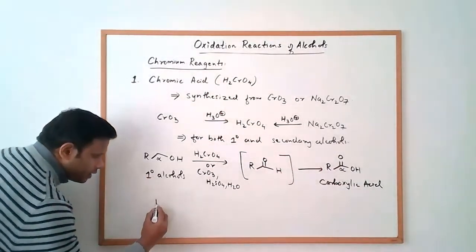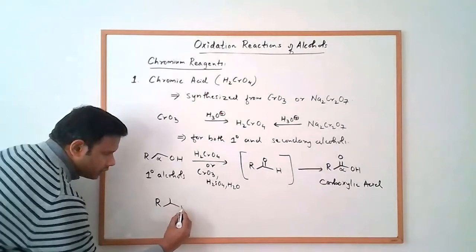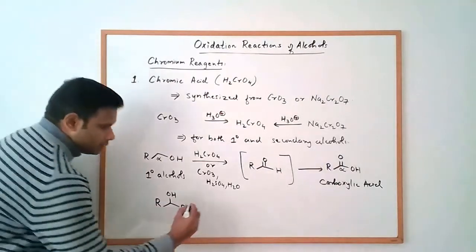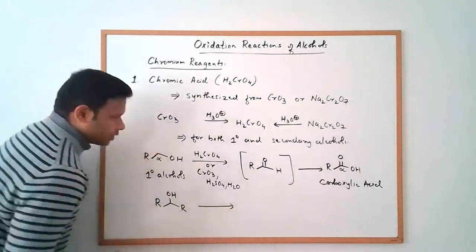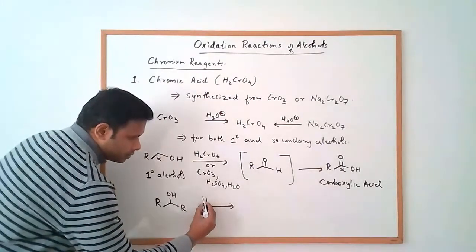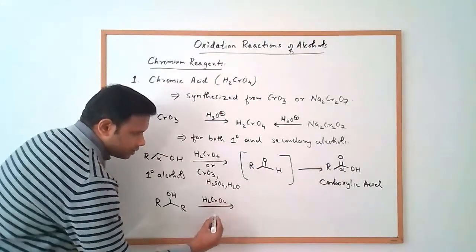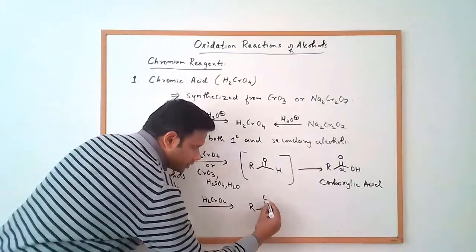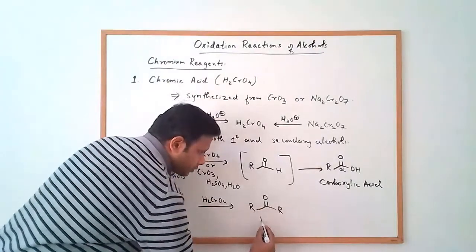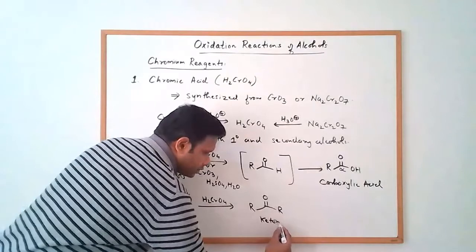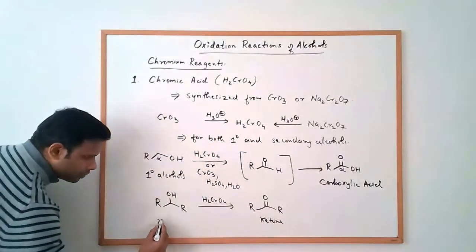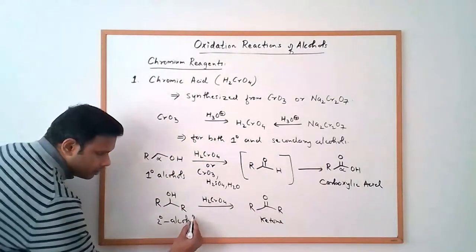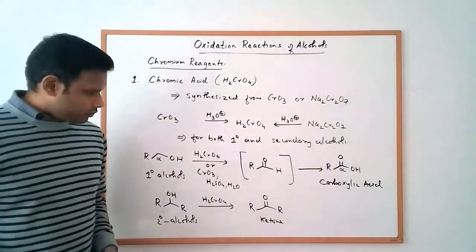For secondary alcohols under similar conditions using chromic acid, they are oxidized to the corresponding ketone. The reaction stops here because secondary alcohols cannot be oxidized further.